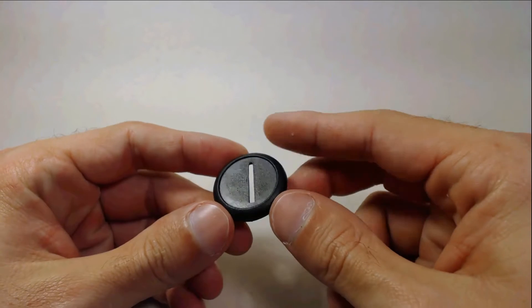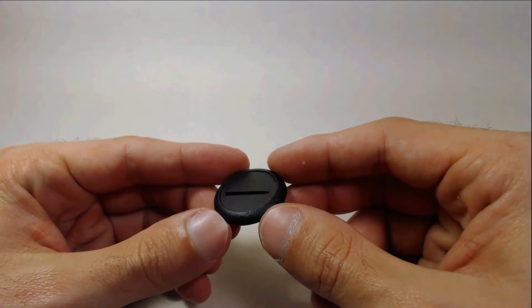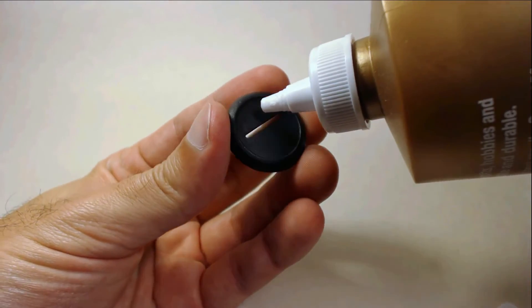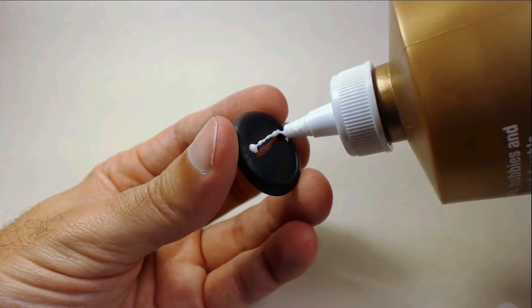Sunken bases work better than standard flat bases when using green stuff, as the recessed area holds the epoxy better. First, you'll want to cover up any gaps in the base. Do this by gluing a strip of paper over any hole or gap found in the base.